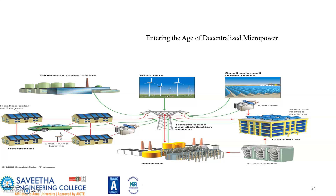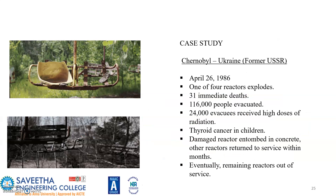A pictorial representation is shown regarding entering the age of decentralized micro power. The Chernobyl incident occurred in the USSR on April 26, 1986. One of the four reactors exploded — immediate deaths numbered 31, and 1,600,000 people were evacuated. Around 24,000 evacuees received high doses of radiation causing thyroid cancer in children. The damaged reactor was encased in concrete, and other reactors were returned to service before eventually being shut down.